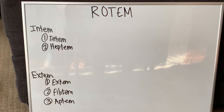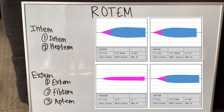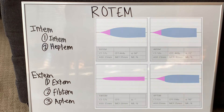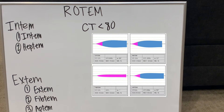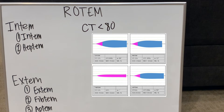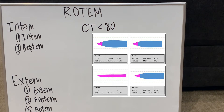Now that we have the basic definitions and assay types down, let's go back to the original image. As you can see, there are four different boxes: Extem, Intem, Fibtem, and Aptem — the Intem family and three of the Extem. It doesn't really look normal. The first thing we look at is clotting time; a normal clotting time is less than 80 seconds. Looking at this image, both the Extem and Intem show clotting times in the 50-second range, indicating we don't need any FFP for this patient.